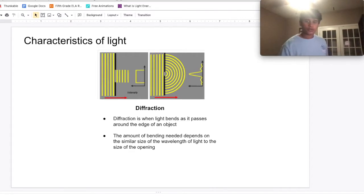Another characteristic of light is diffraction. When light bends around the edge of an object, it is called diffraction.